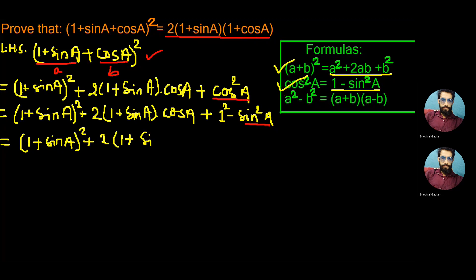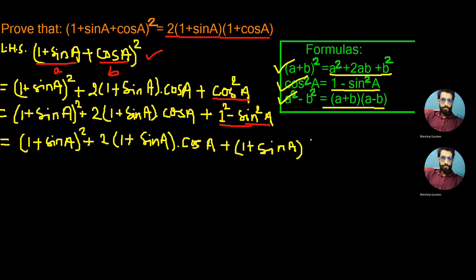Into cos A — all the same from the above step — and here we convert 1 square minus sine square A using the difference of squares formula: a square minus b square equals a plus b into a minus b. So 1 minus sine square A can be written as one plus sine A into one minus sine A.